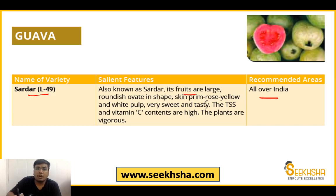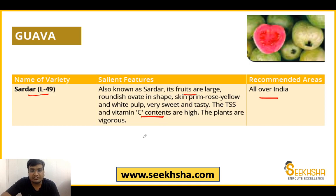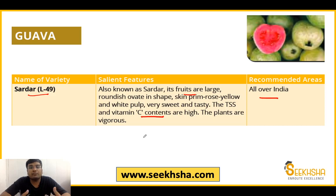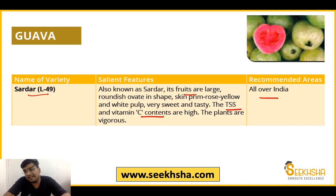The fruits of the L49/Sardar variety are large, roundish to oval in shape, with a rose color visible on the outside. The plants are vigorous with fast growth. These are important points to remember. A question could be asked like: which variety of guava is rich in a particular content? The answer is that it is rich in TSS and vitamin C content.